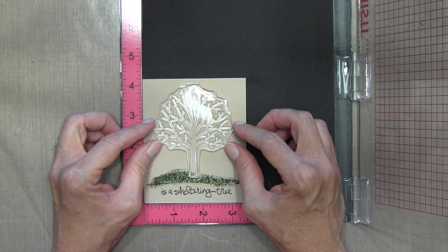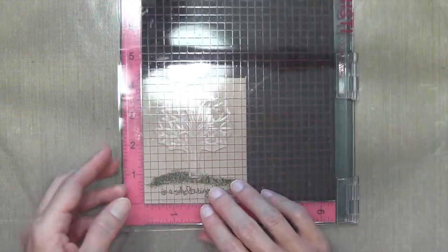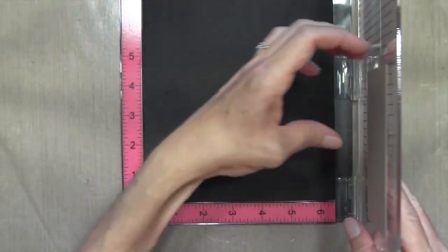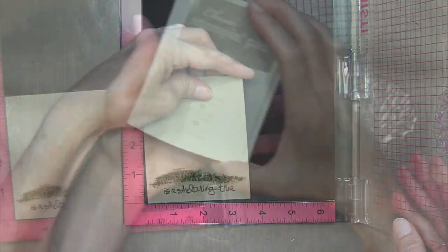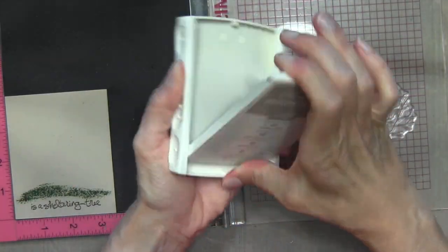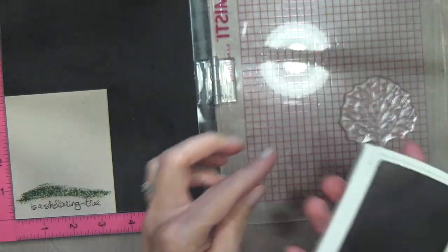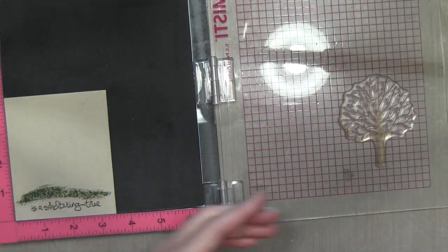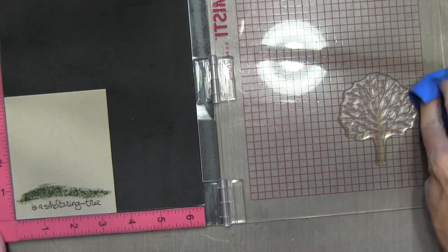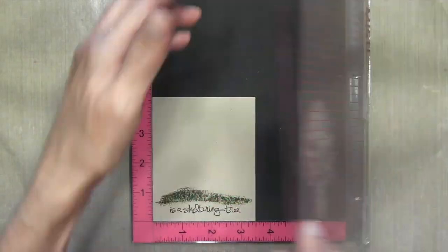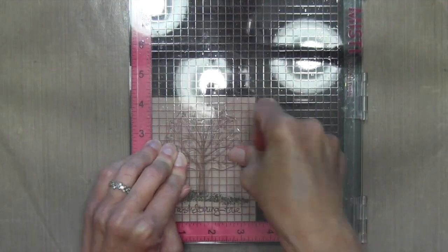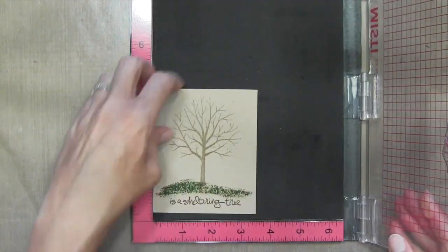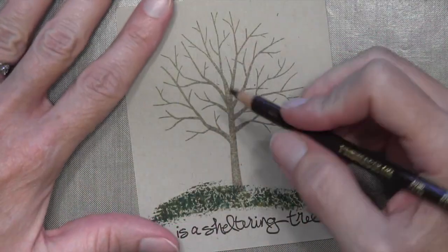Now I'm gonna use my MISTI again to place my tree. And I'm gonna be using Crumb Cake ink which matches the Crumb Cake cardstock. So it's gonna be kind of a tone on tone look. But after I ink it up and stamp it, I'm gonna be coloring it a little bit more with some Prismacolor colored pencils. And you'll see me do that in a minute here. So I'm just gonna overlap the trees just a little, or I'm sorry, overlap the grass just a little bit.